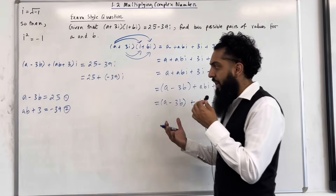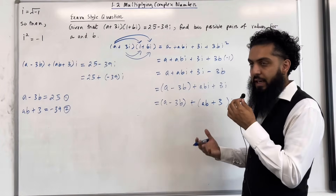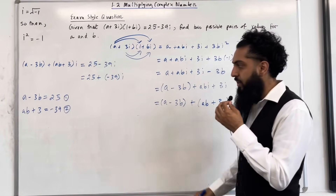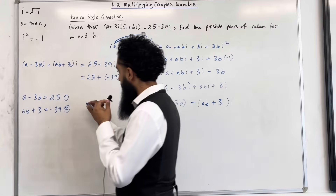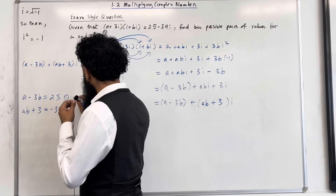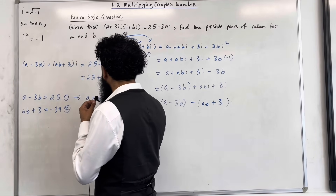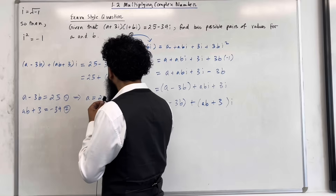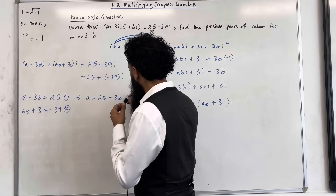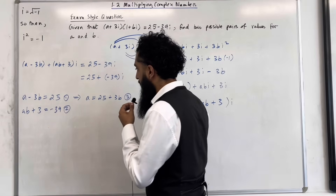Let's go back to equation 1 and make a the subject. If I do that, I get a is equal to 25 plus 3b — equation number 3.